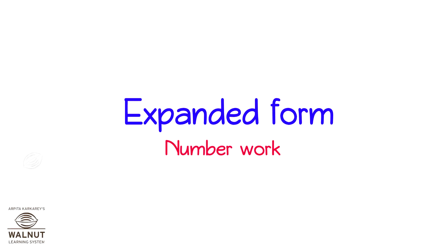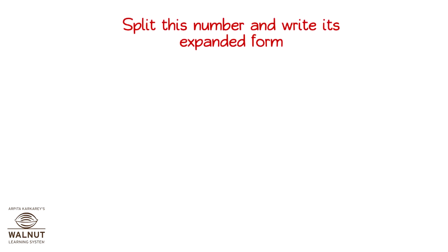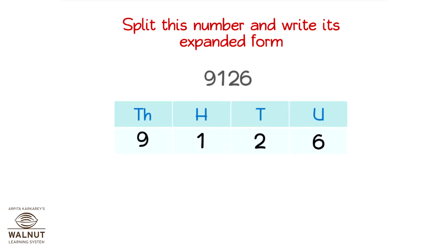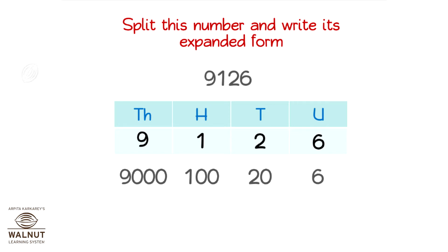Expanded form number work. You know that we can split a number into its place values. Split this number — we can split it like this. Now let's expand the number in each position according to its place value: 9126. When we add them up, we get the expanded form of the number.